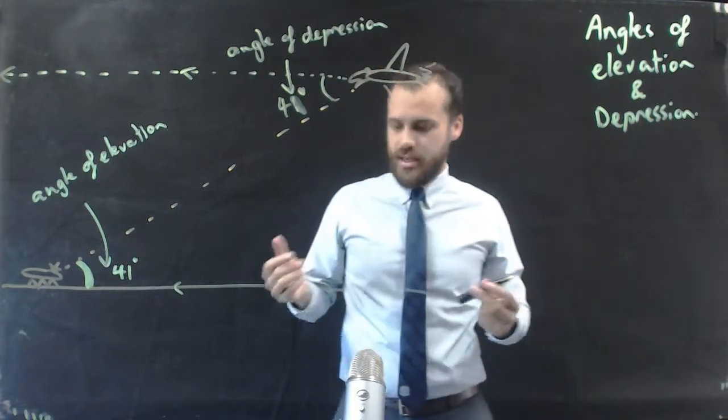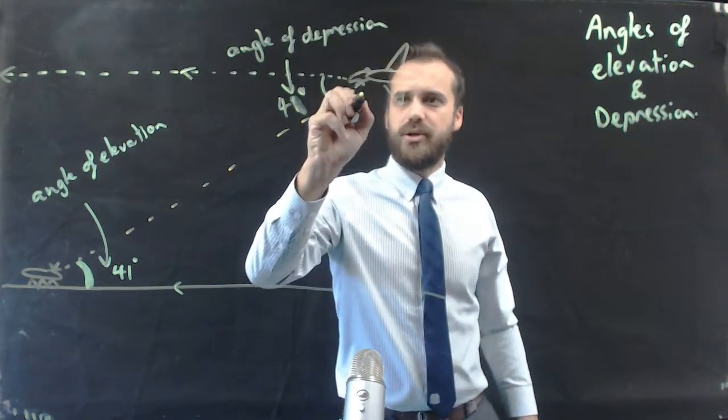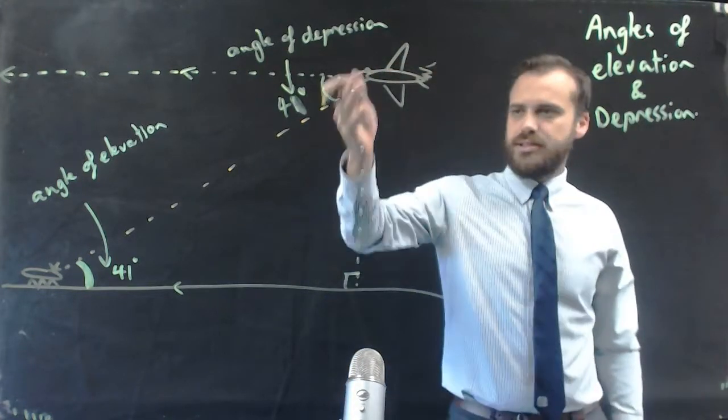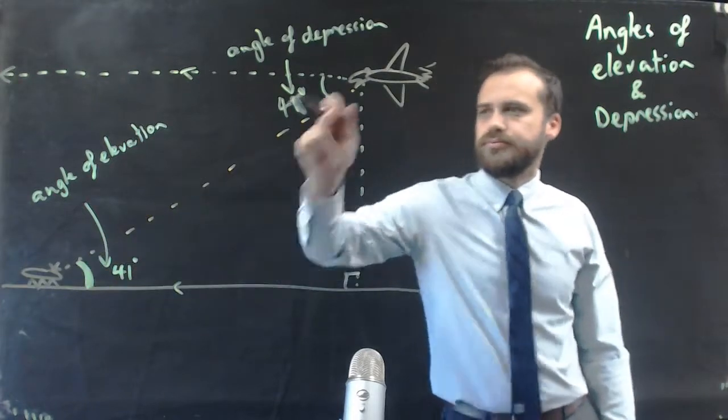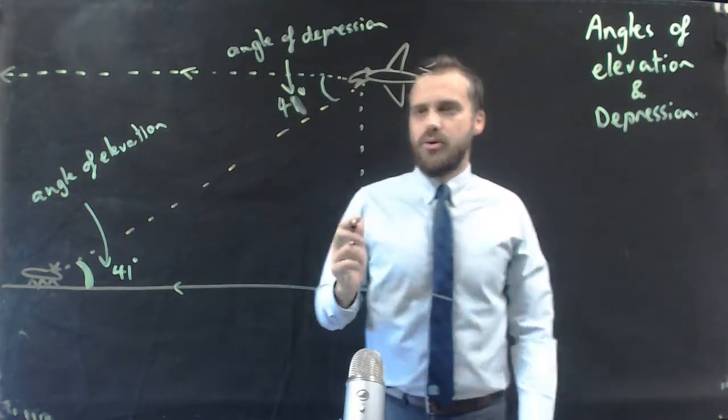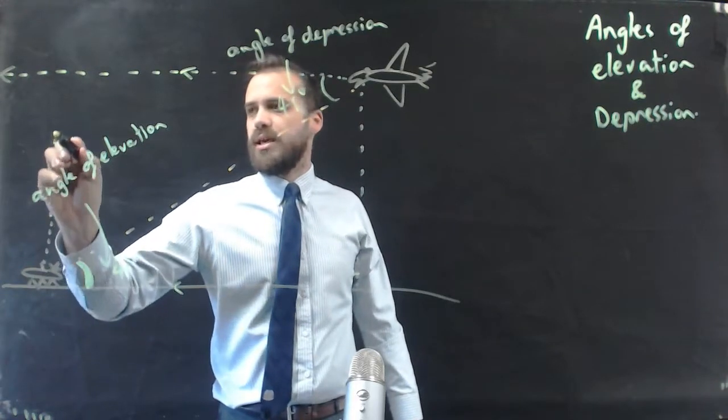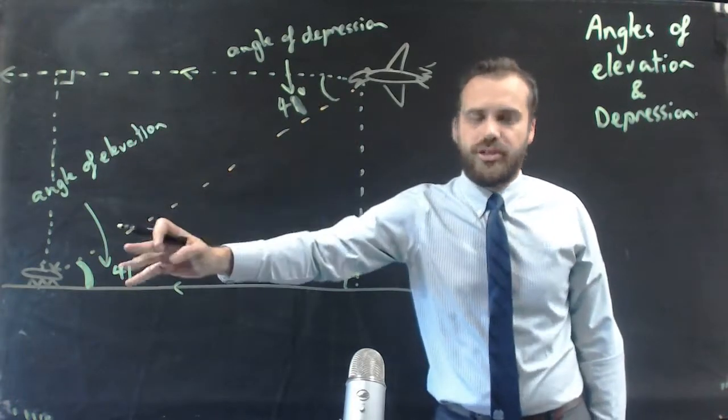Now, I can draw a triangle. I can draw a line straight down from the bird, and you can see I have a nice right angle triangle. Or, I can draw a line up from the ant, and I have a nice right angle triangle.